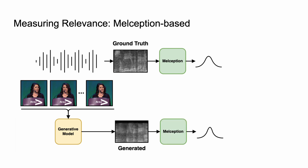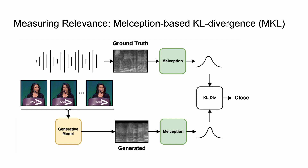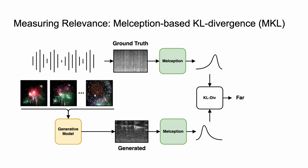Now, we need to just compare the distributions, and for this we are going to use KL divergence. We call this metric MELCEPTION-based KL divergence, or MKL for short. In contrast to inception score and FID that rely on dataset-level distributions, here we compare distributions per sample. And we can do the same for the next video, and so on. As the final score, we take the average across the dataset.